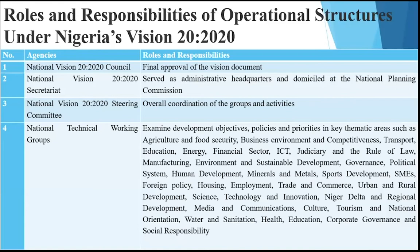In this operational structure, the National Vision 2020 Council handled final approval of the vision document. The National Vision 2020 Secretariat served as the administrative headquarters, domiciled at the National Planning Commission. The National Vision 2020 Steering Committee dealt with overall coordination of the thematic groups and activities.